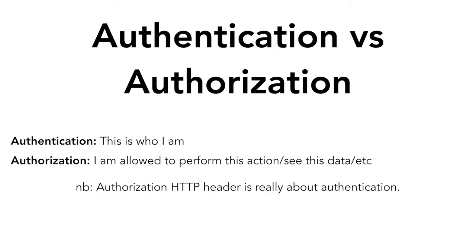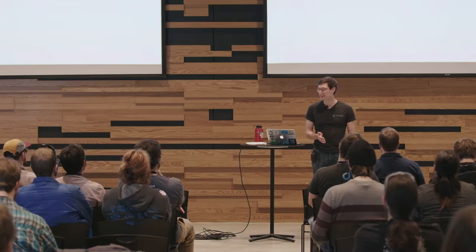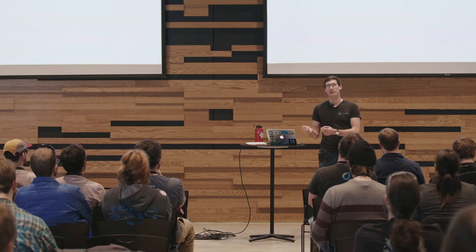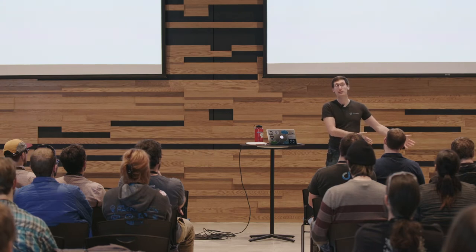A little bit of vocabulary before we get too far in. Authentication versus authorization. Authentication is saying 'this is who I am.' Authorization is 'I am allowed to perform this action or see this data.' Authentication might be 'I control this email address,' whereas authorization might be 'whoever controls this email address is allowed to push edits to this GitHub repository.' Confusingly enough, the HTTP authorization header is mostly used for authentication.